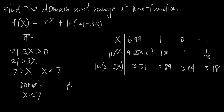Therefore, the range of the function is going to be y greater than 0, because y is always going to be positive no matter which x value we choose from the domain. So the domain of this function is x less than 7, the range is y greater than 0, and that's how you find the domain and range of a function.